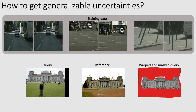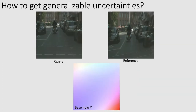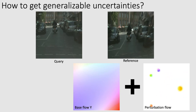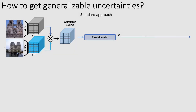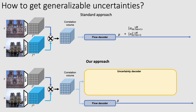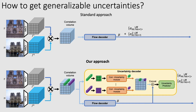We tackle the uncertainty generalization issue from both the data and the network perspective. In terms of data, the major problem is that the synthetic flows are too predictable. We thus introduce small perturbations in the flow that will break its global smoothness. From the architecture perspective, the straightforward choice would be to start from the standard architecture and increase the number of output channels. However, in that case, the network relies too much on neighboring information when predicting the uncertainty. Therefore, we build a parallel uncertainty decoder that inputs the correlation volume and processes information at each point independently.